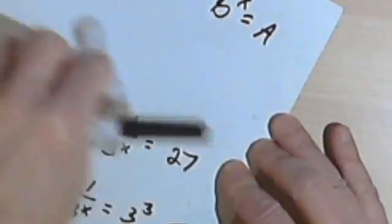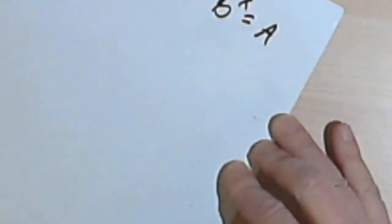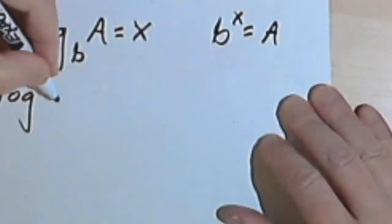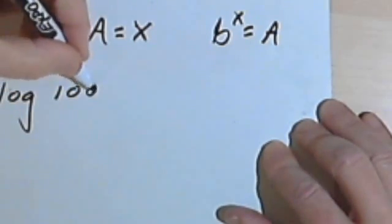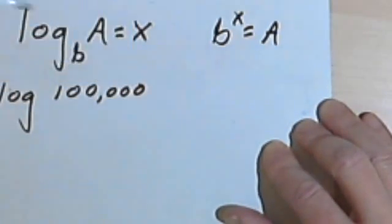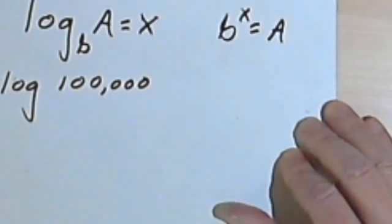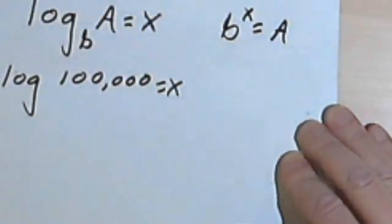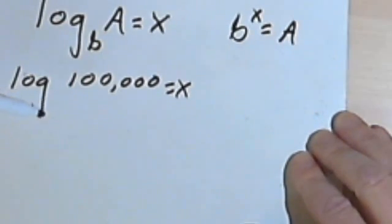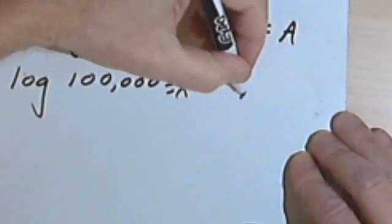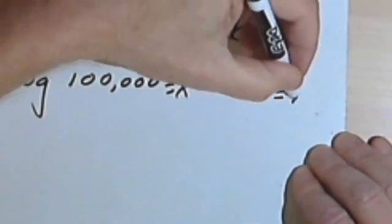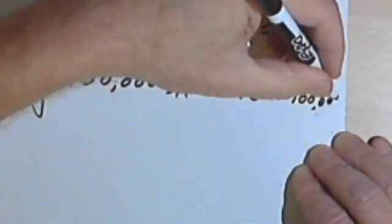Here's one more. Let's do one with the log of 100,000. So that equals x. Now remember, if I haven't written a base, it means the base is 10. So that means I'm going to say 10 to the x power equals 100,000.